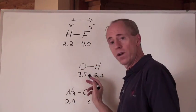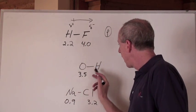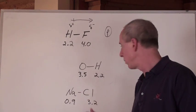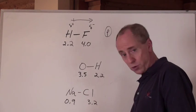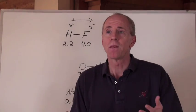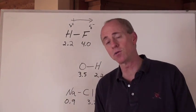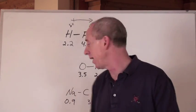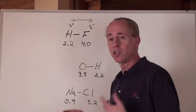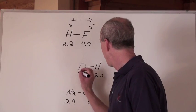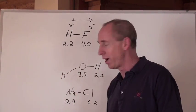Now look, here's a covalent bond between oxygen and hydrogen. The electronegativity difference there of about 1.3 means that is still going to be in the range of sharing electrons. And that's what happens in an O-H bond. Now, by the way, oxygen and hydrogen don't like to necessarily bond like that. They'd rather bond like this and make a water molecule.